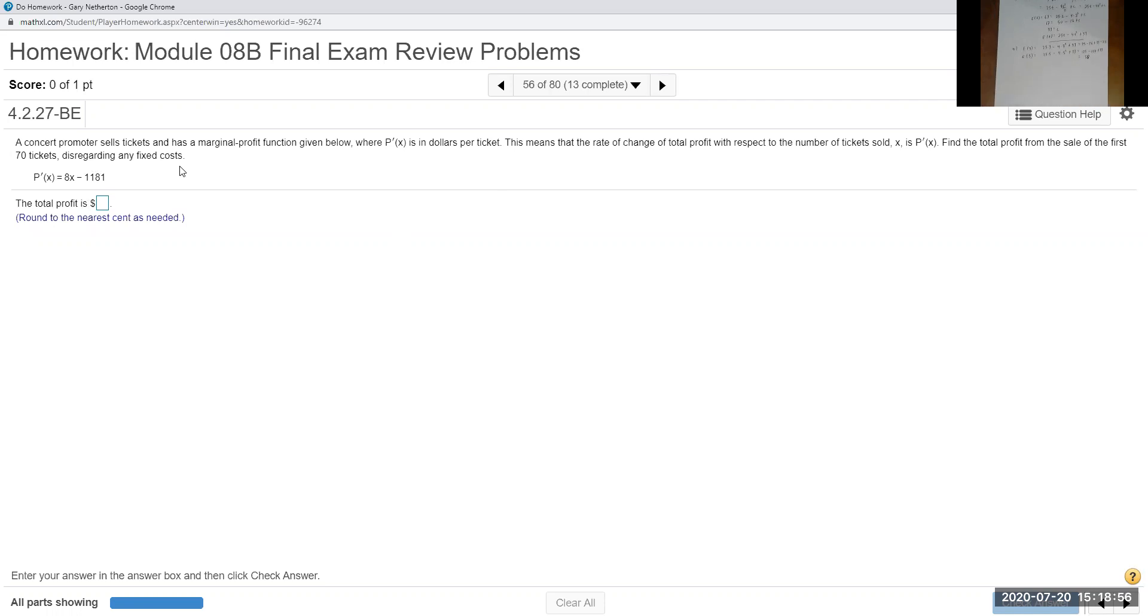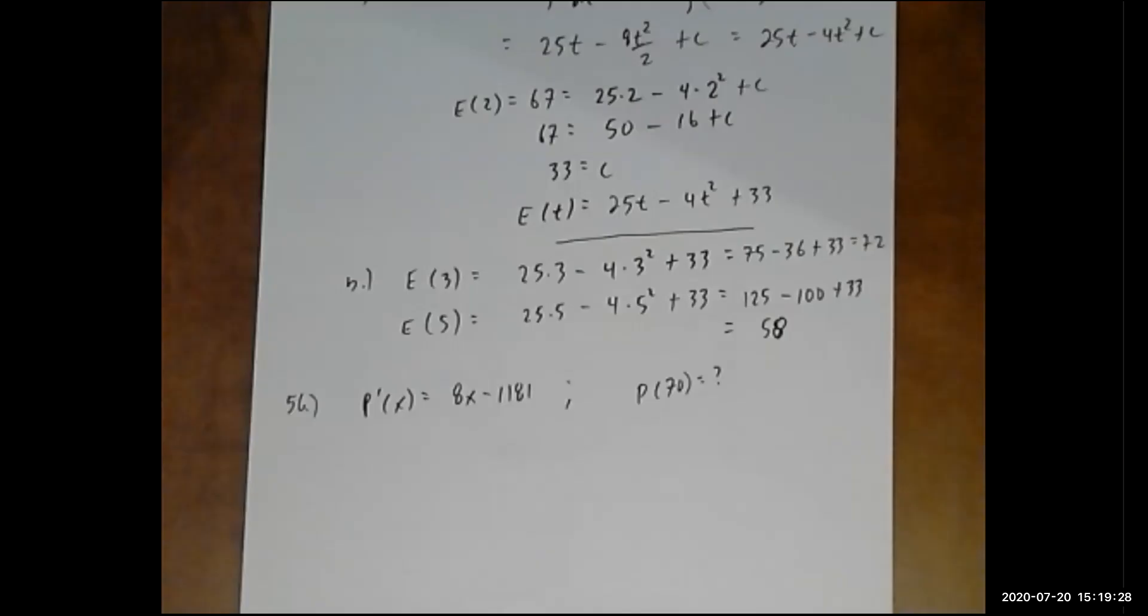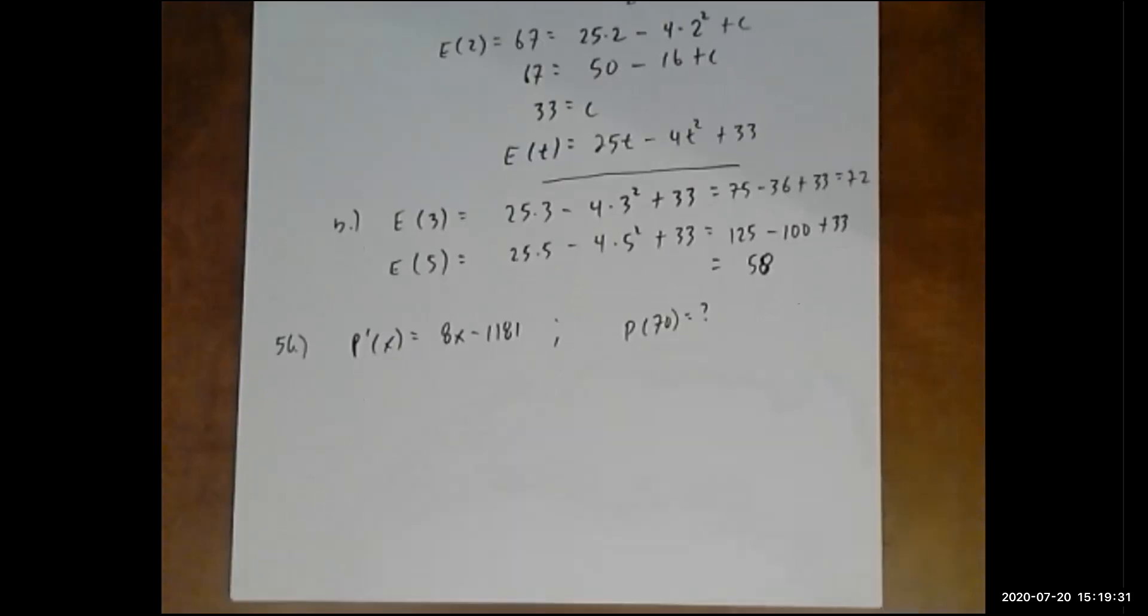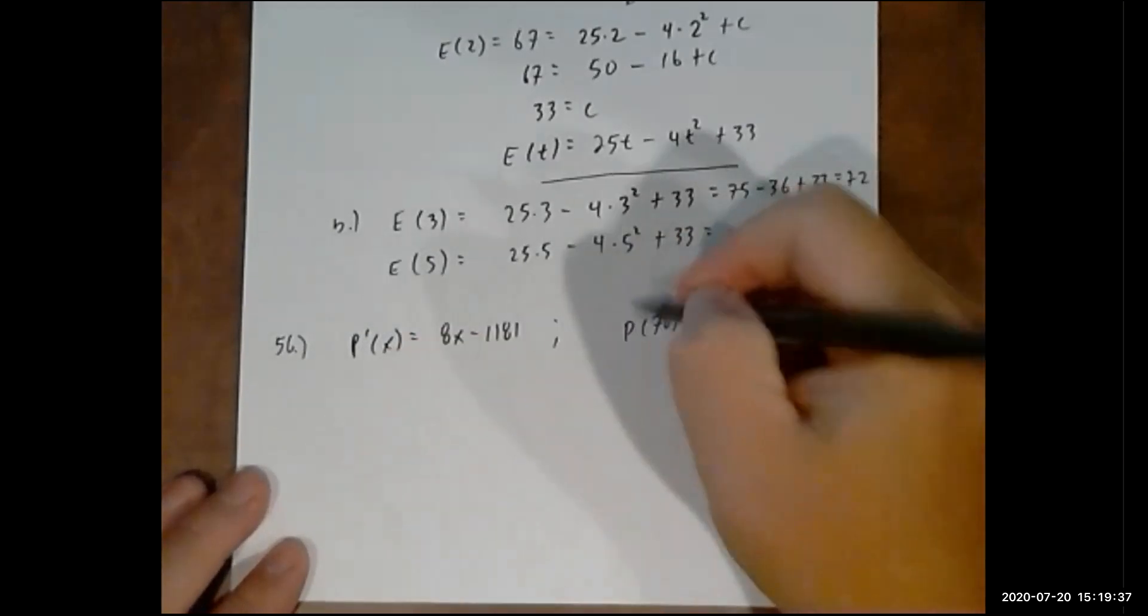This is problem 56. The first derivative of P(x) equals 8x minus 1181, and what they really want to know is profit when you sell 70 tickets. To get the actual function, I'm given the first derivative, so I take the integral.